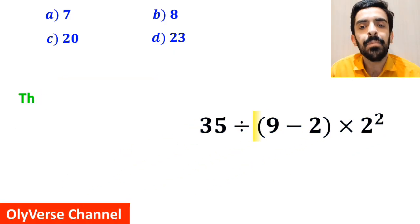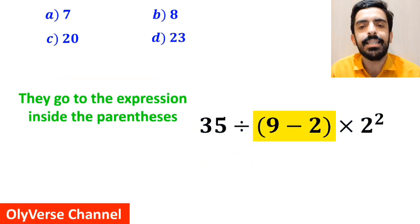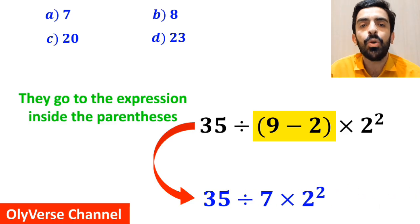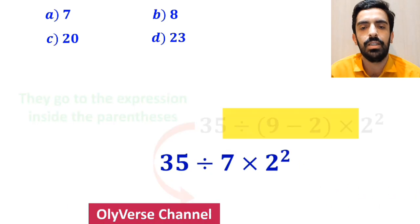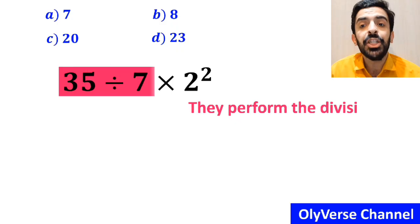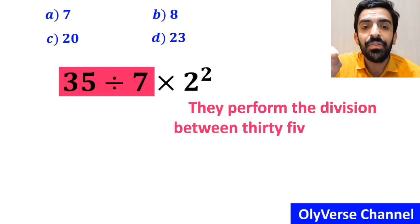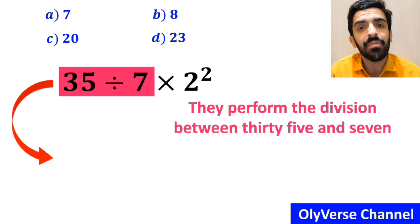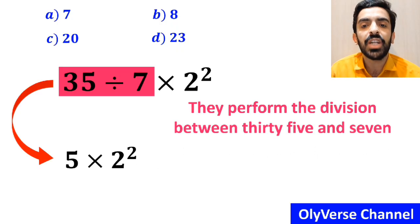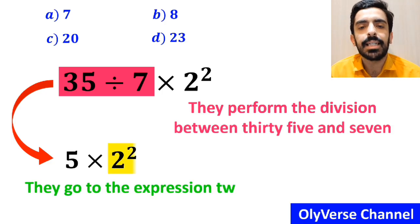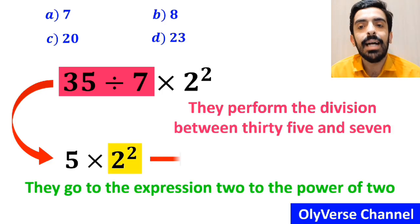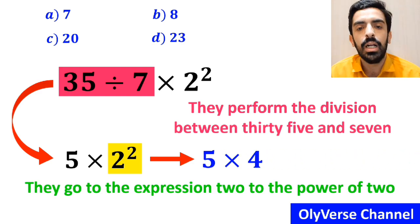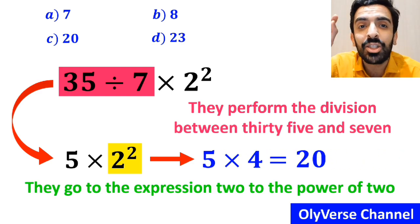In the next step, they go to the expression inside the parenthesis and simplify to 35 divided by 7 times 2 to the power of 2. Then they perform the division between 35 and 7, writing 5 times 2 to the power of 2. In the final step, they simplify 2 to the power of 2 to get 5 multiplied by 4, which gives them the answer 20.